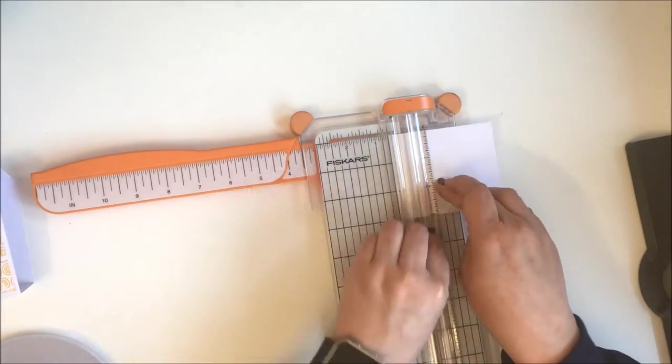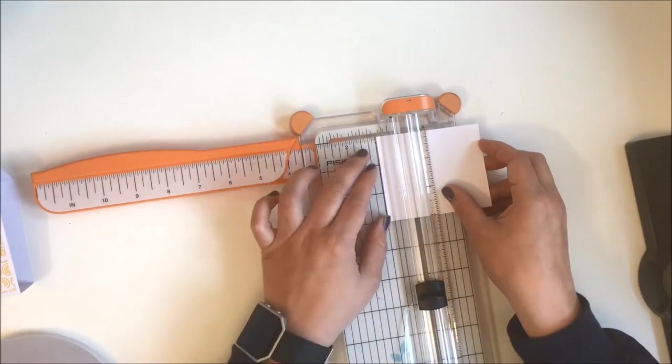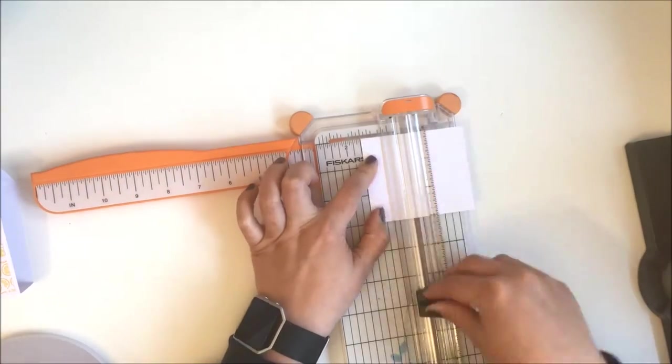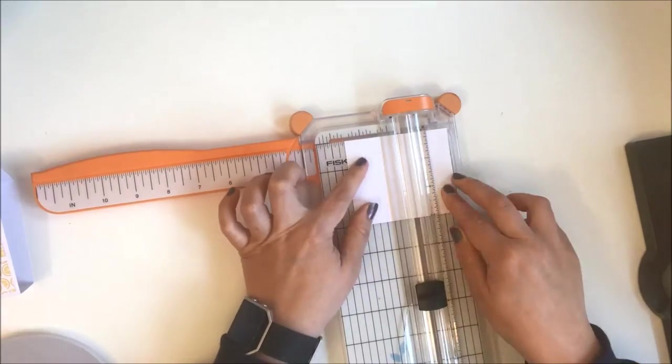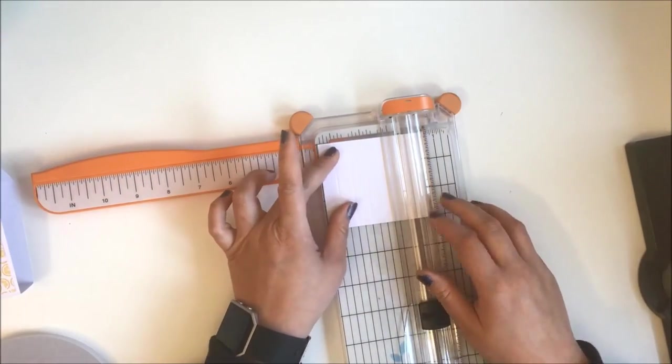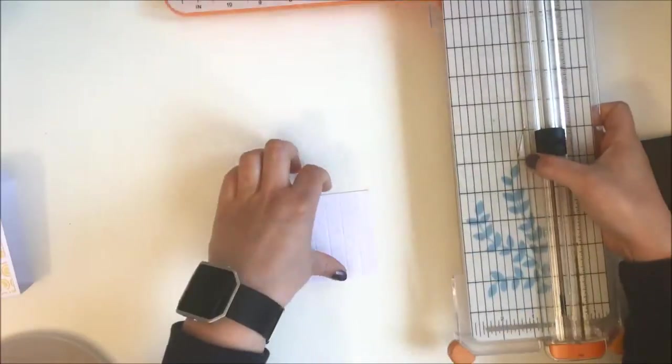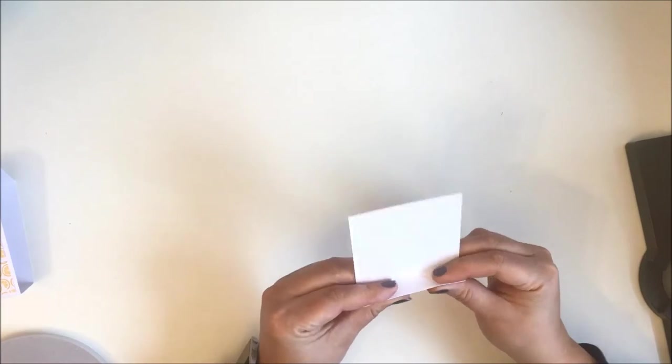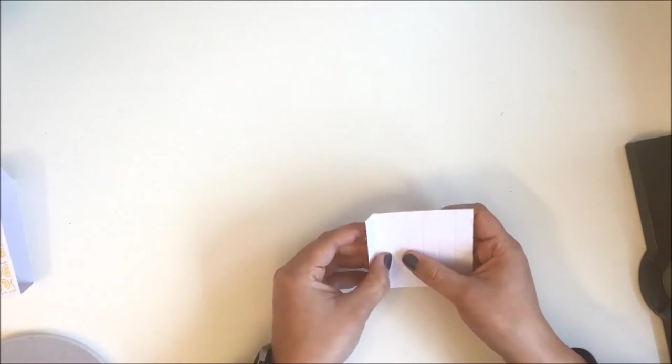On this one, you score every half inch. On the 3.5 inch side, the longer side, you score it at half inch, one inch, 1.5, two, 2.5, three, and 3.5. Then you fold it.